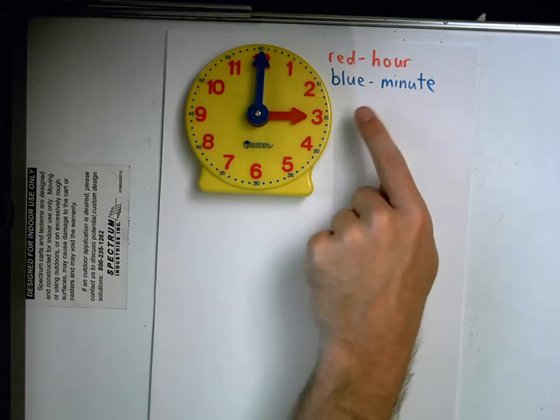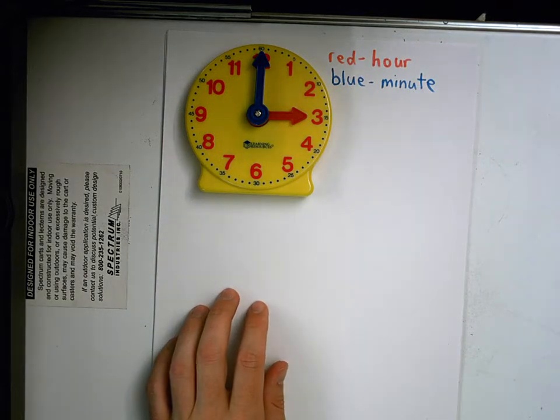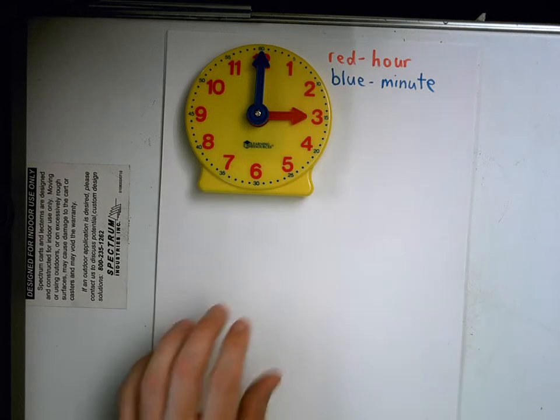And the longer blue hand on this clock is the minute hand. It tells us how many minutes we've gone in that hour. So we use this clock to tell the time.